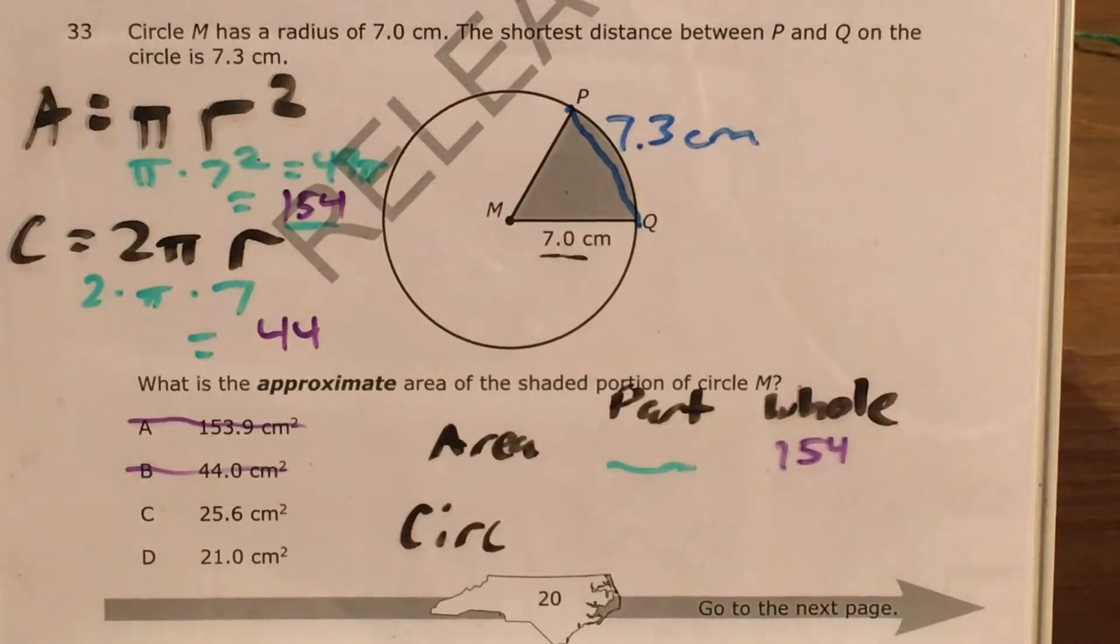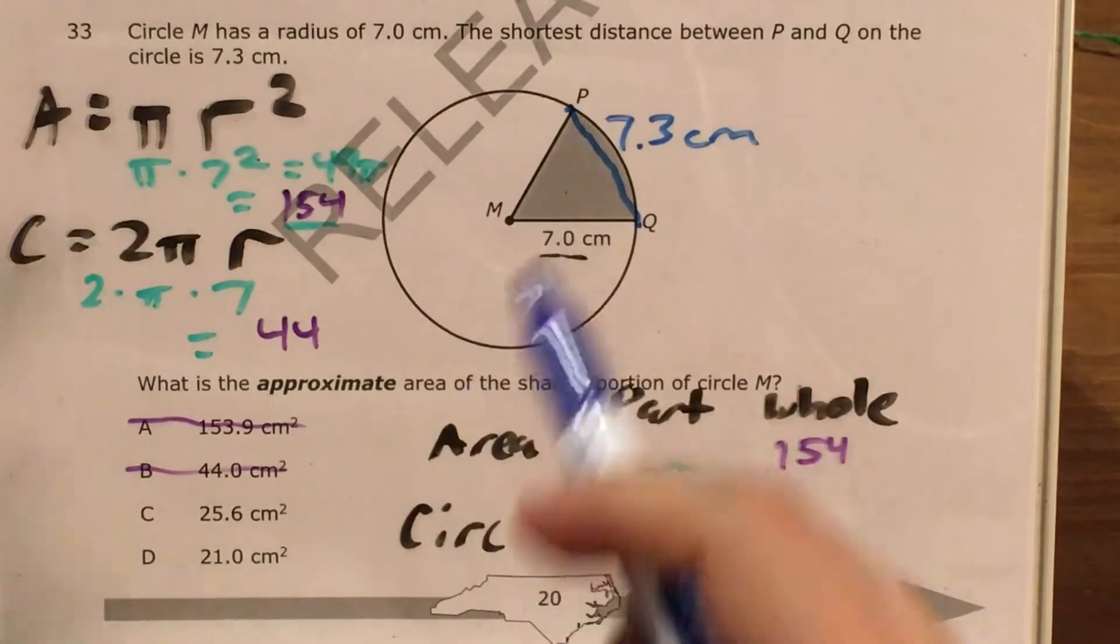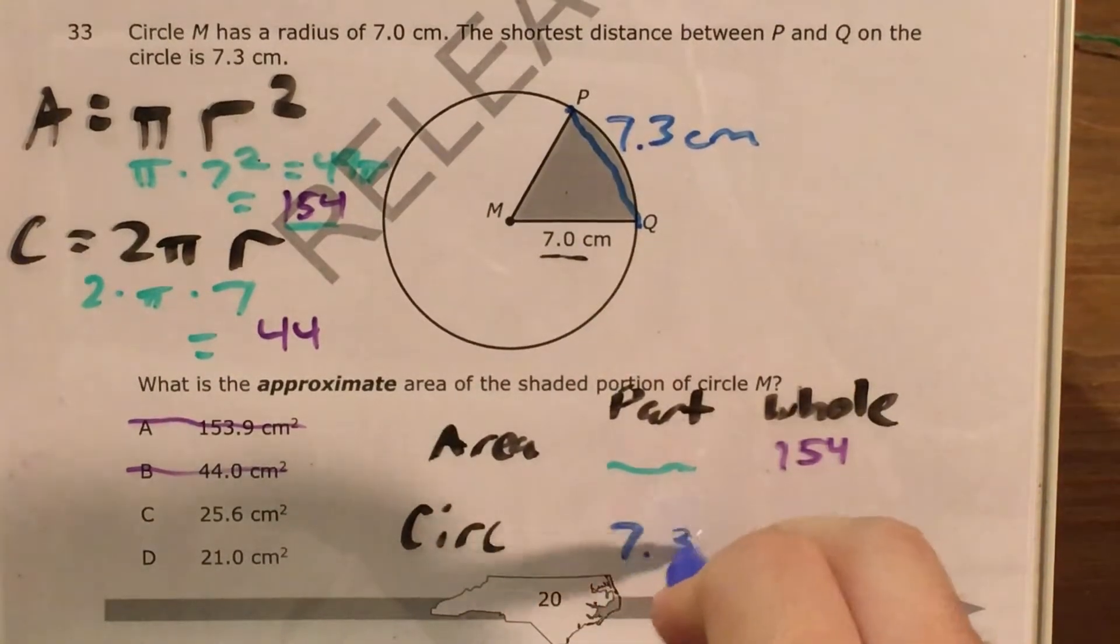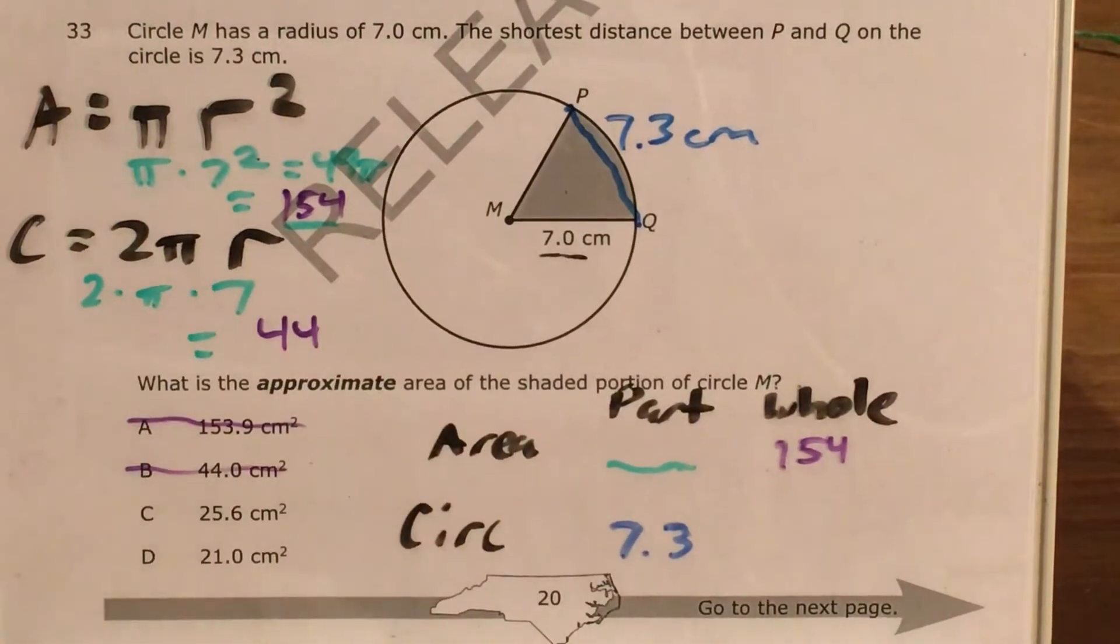And then for my circumference, my part, the only number it gives me for my part is the 7.3 centimeters, so I'm going to plug that in, or 7 and 3 tenths of a centimeter. And now my whole circumference is 44.